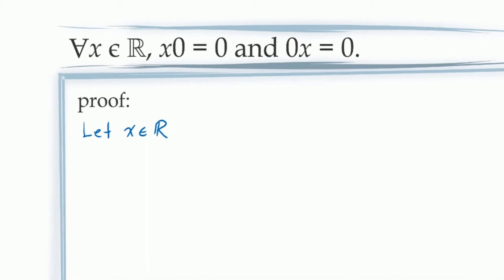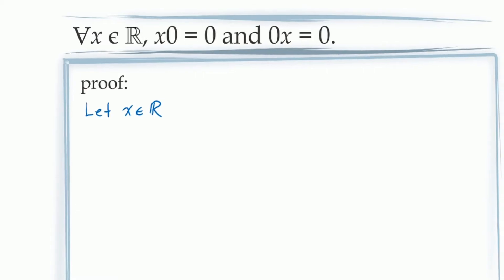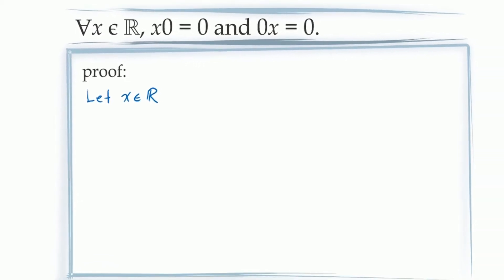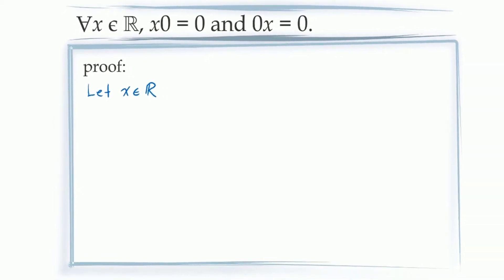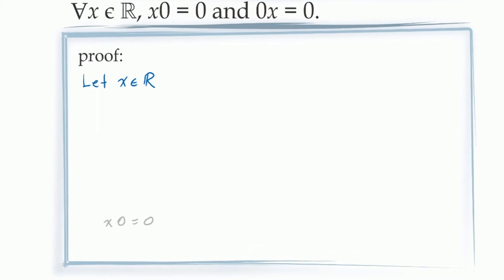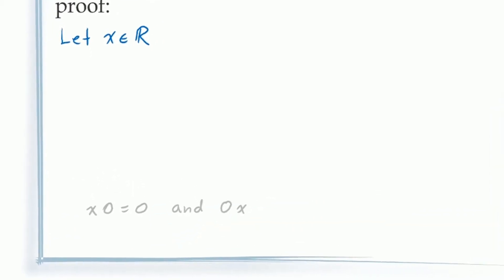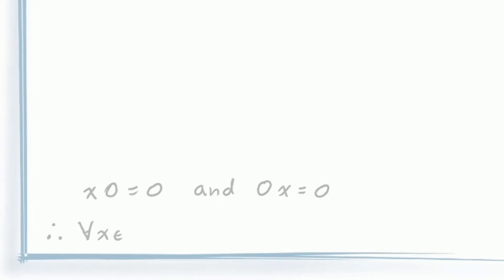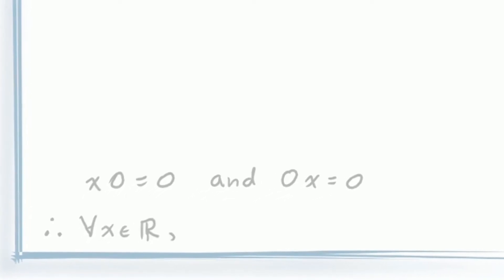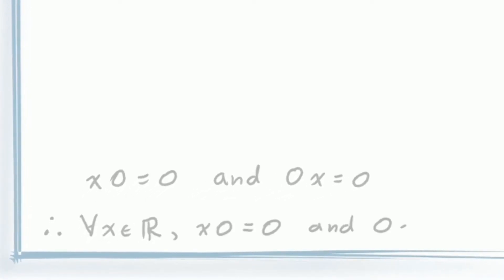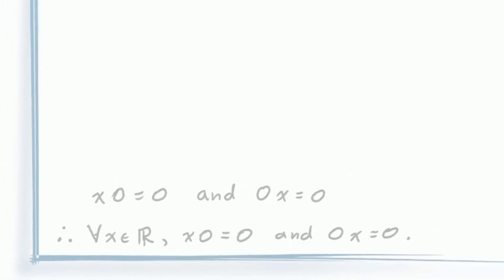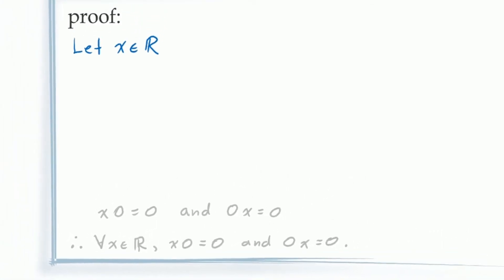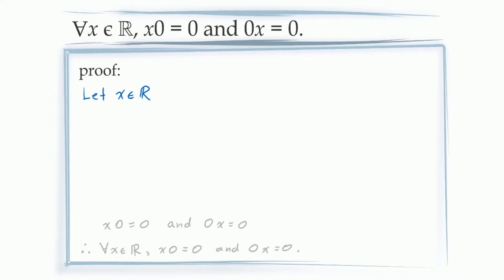If we are able to successfully demonstrate that our statement is true for this arbitrary constant x — in other words, if we demonstrate that 0×x = 0 and x×0 = 0 — then universal generalization allows us to conclude that for all values of x in the real numbers, our statement is true. The obvious question now is how we demonstrate that for this arbitrary constant x. To figure that out, we should get out some scrap paper.